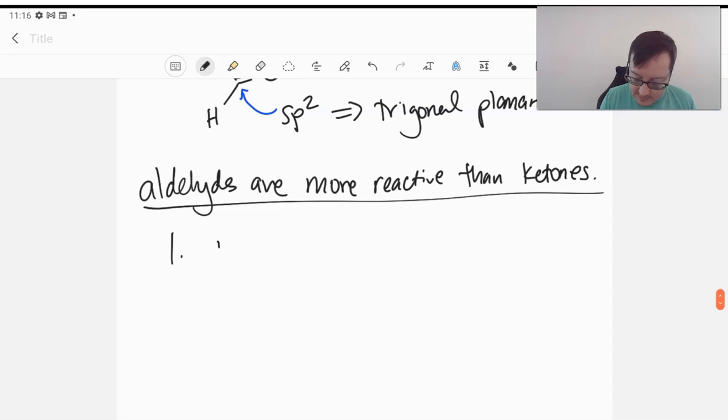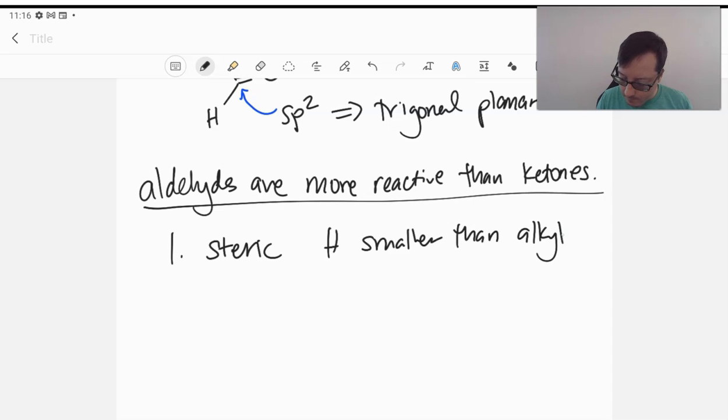Reason number one is steric. Aldehydes have hydrogens. Hydrogens are smaller than alkyl groups. So it's simply easier for nucleophiles to come in because you just have a hydrogen on at least one side of your aldehyde. Steric reasons favor aldehydes being attacked.